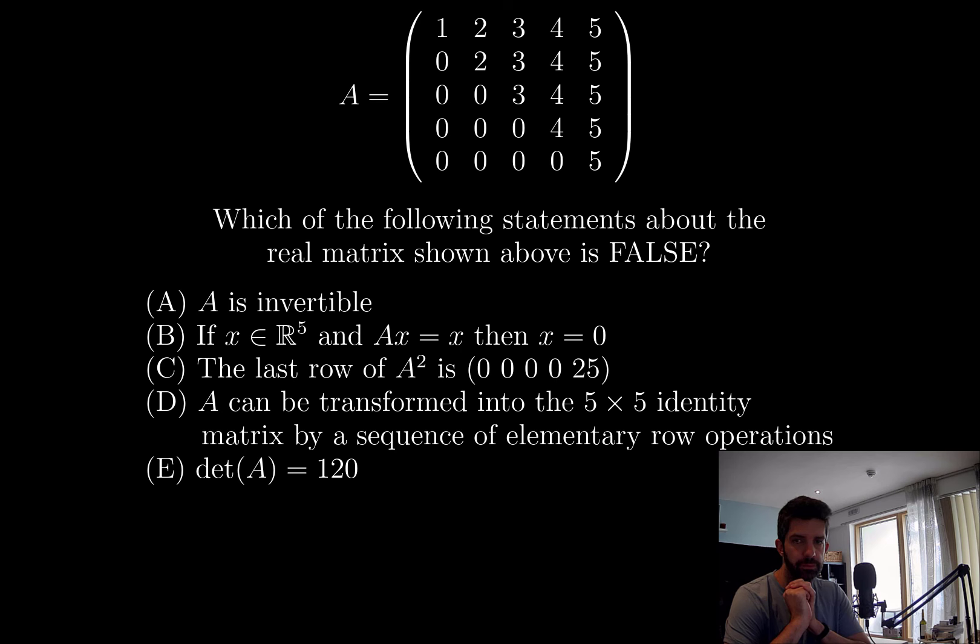A is invertible? No, just by looking at it, I'm pretty sure A is invertible. I mean, it's in some kind of proper echelon form or something like that. And there's no rows of zeros.